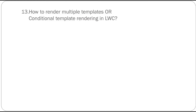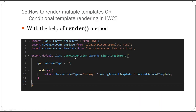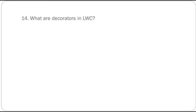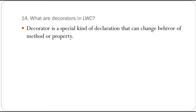Next: how do you render multiple templates or conditionally render HTML templates in LWC? With the help of the render method. For example, if I have a bank account component that can be either savings or current, and I want to show different HTML for each type, I can use the render method to check the condition and return the appropriate HTML file.